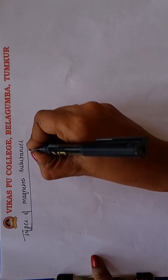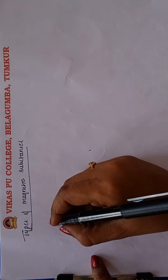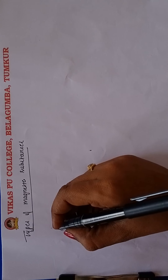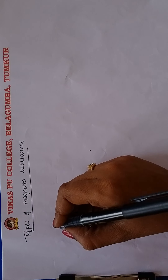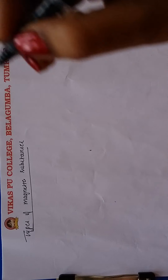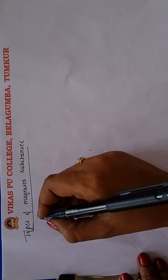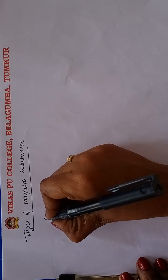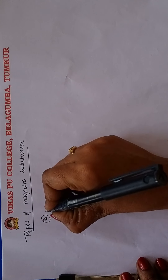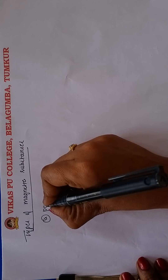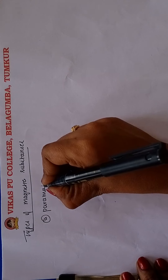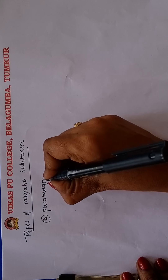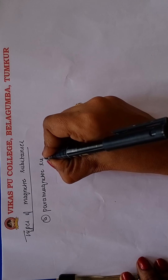On the basis of their magnetic properties, substances are classified into five types. The first one is called paramagnetic substances.